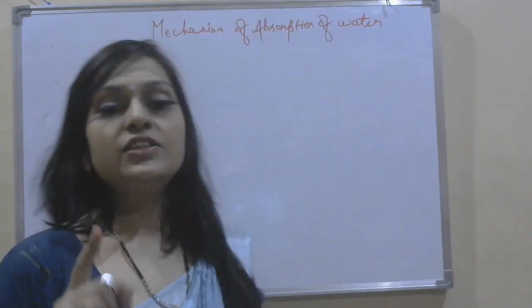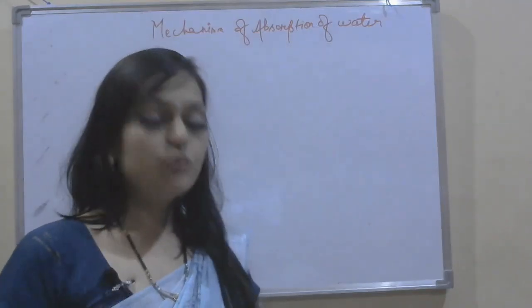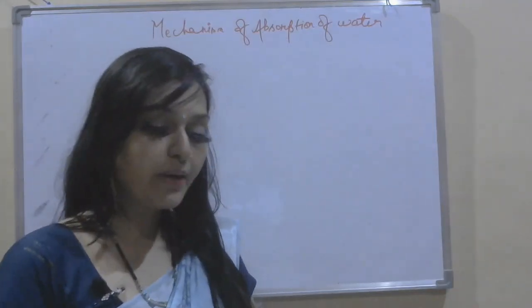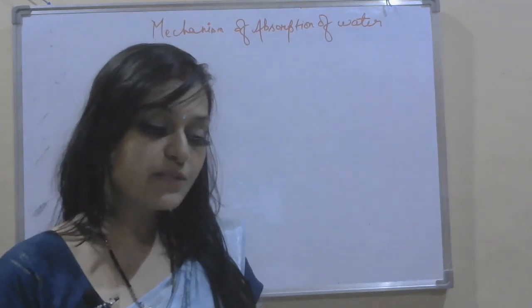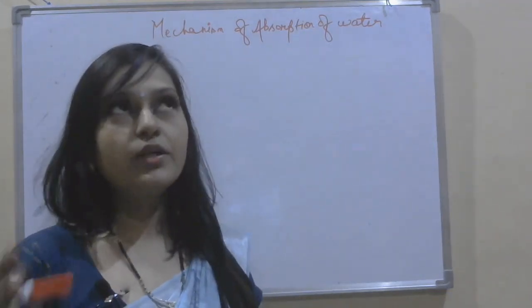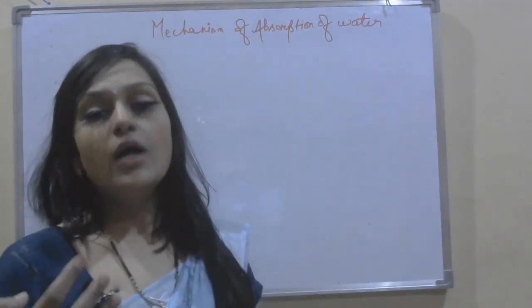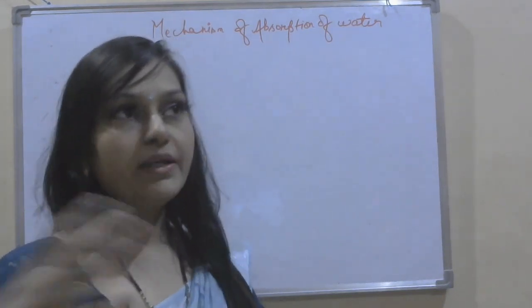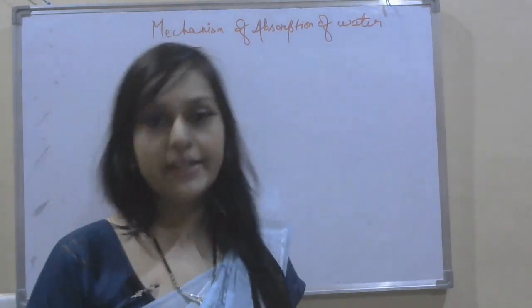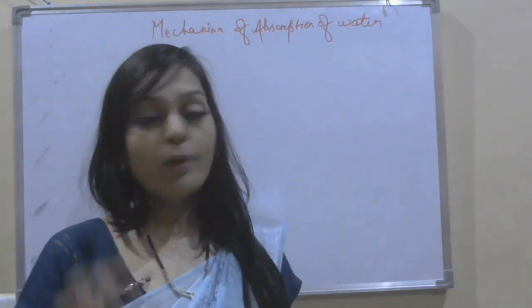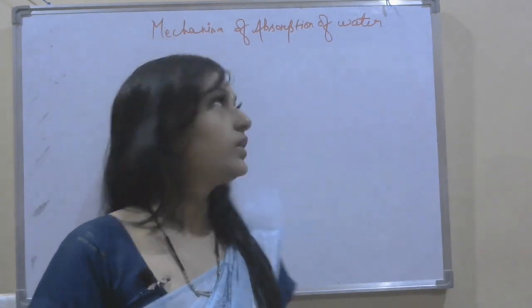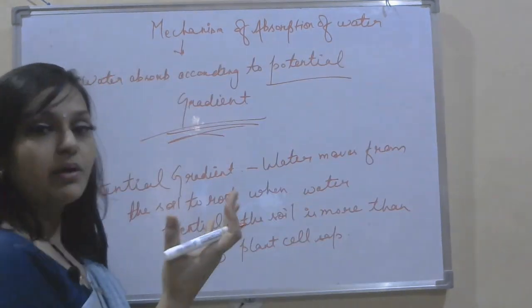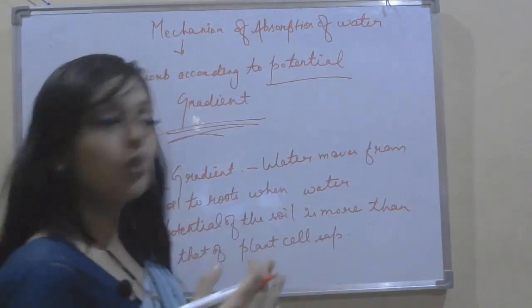Water is absorbed and how it is transferred to the plant. Water is absorbed by the plant as per the potential gradient. Water moves from the soil according to its potential gradient. What is the potential gradient? In the potential gradient, water moves from the soil.